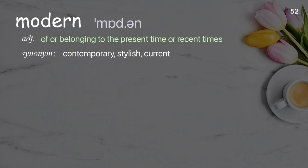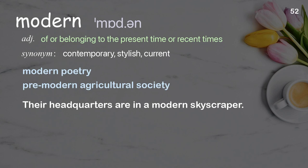Modern: of or belonging to the present time or recent times. Examples: modern poetry, premodern agricultural society. Their headquarters are in a modern skyscraper.